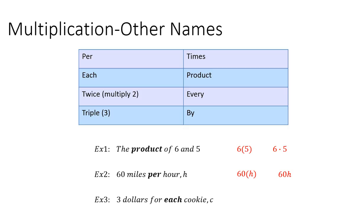Example 3, $3 for each cookie represented by the variable C. So what it's saying is that it's wanting you to multiply 3 times C. And a more proper way of writing that would just be 3C, because you don't need parentheses when you're multiplying by a variable like that.